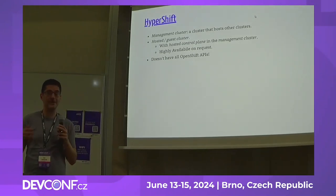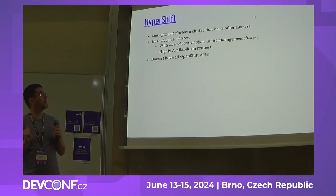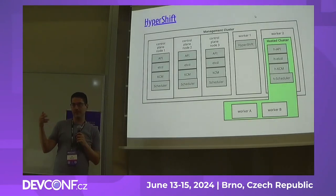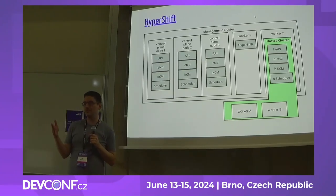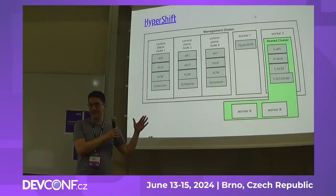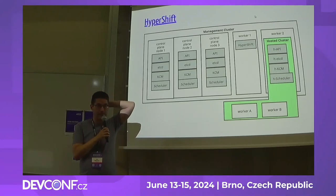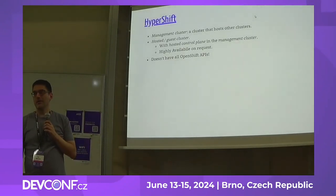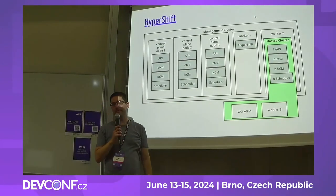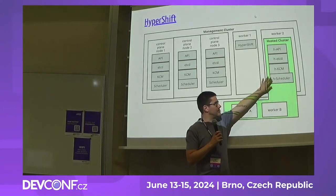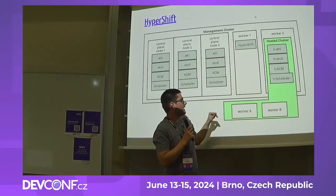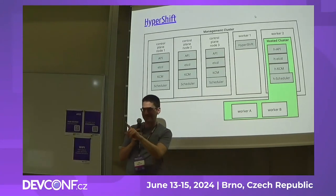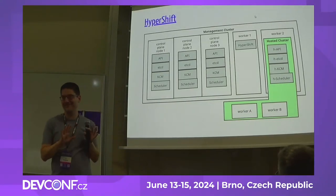HyperShift is a pretty big project with its own terminology. One thing to note: HyperShift doesn't provide all OpenShift APIs. For example, the API to upgrade the cluster is not available inside the hosted cluster — instead you go to the management cluster and edit the HyperShift CRDs to upgrade. Worker nodes are connected through operators running in the hosted control plane — the cluster API and network operator all run there, and only they know about the workers. The network connection setup involves some complex tricks that are beyond the scope of this lightning talk.